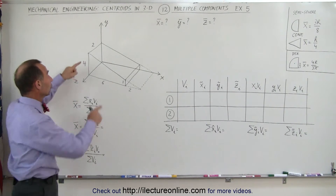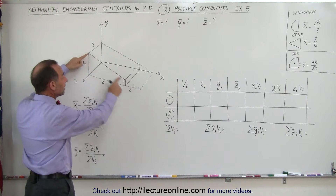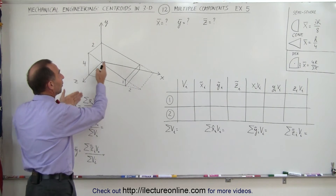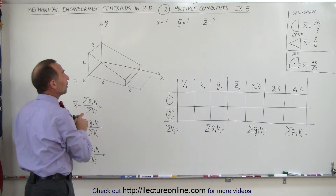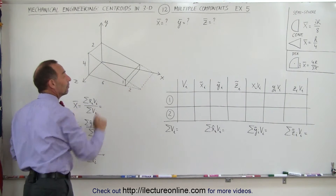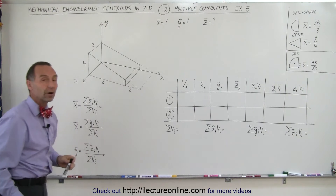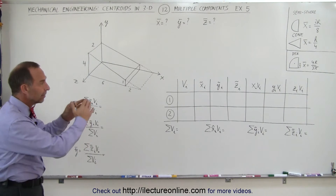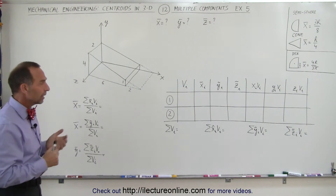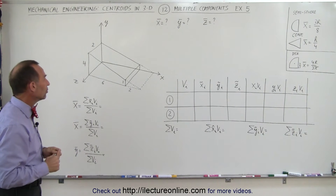The best way to do that is to assume that the wedge is intact. We find the centroid of the intact wedge and then we subtract the centroid of the missing part. Again the very same setup as before. Let's go ahead and try to do that.